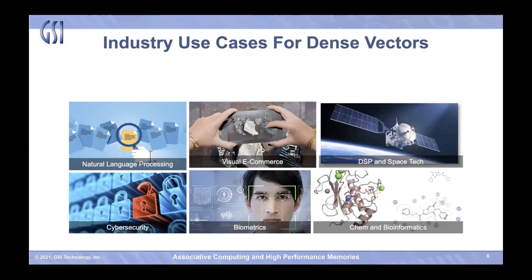Beyond e-commerce, there are other use cases for dense vectors and nearest neighbor search popping up in other domains. These include chatbots, question-and-answering document search systems based on natural language processing, AI-based digital signal processing, computer vision for satellite and earth observational systems in space, malware and threat detection in cybersecurity, large-scale biometrics like face recognition and video search, and molecule search and AI-based drug discovery.